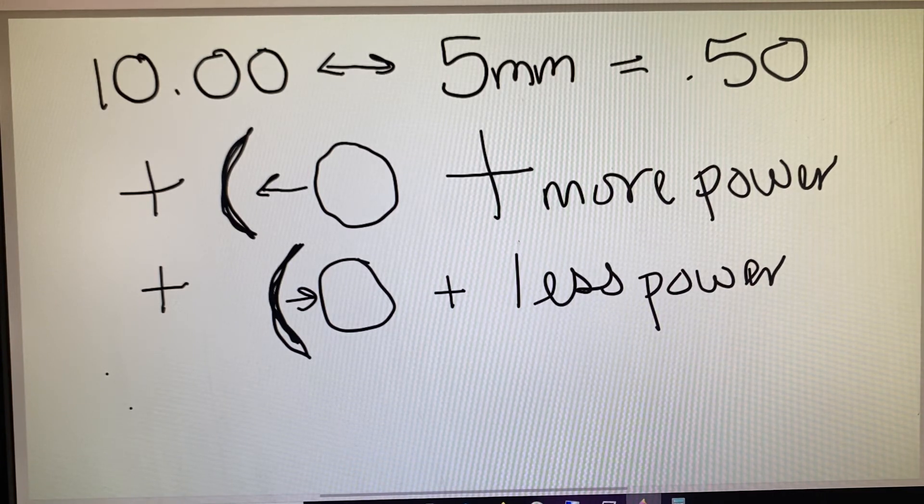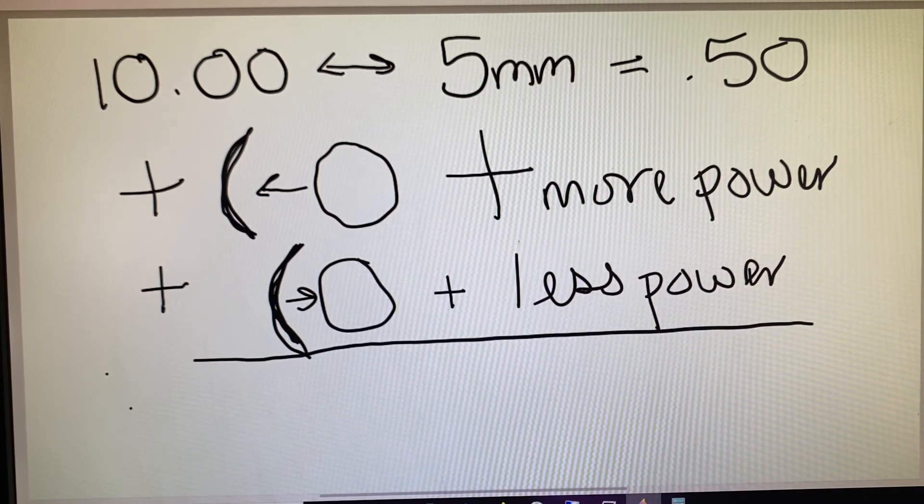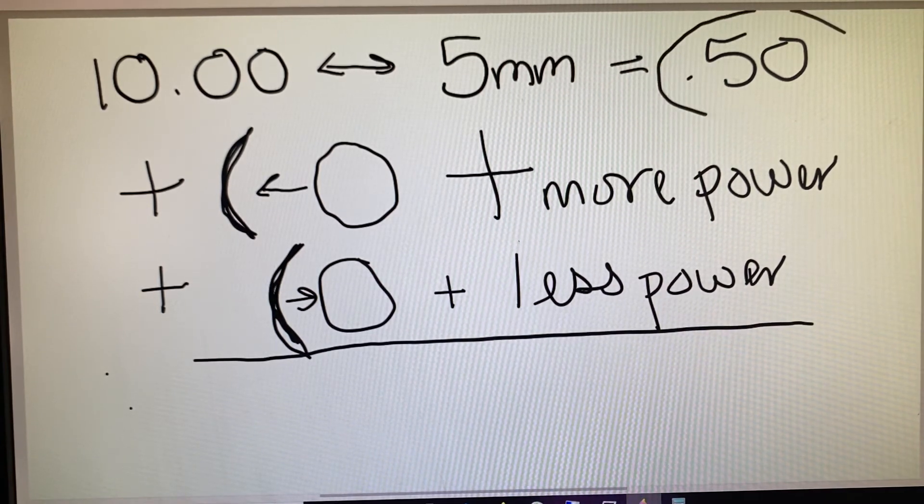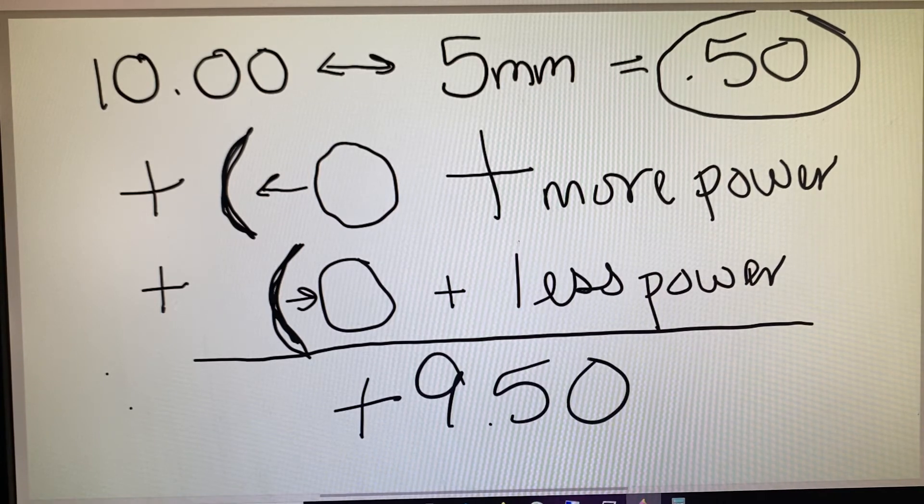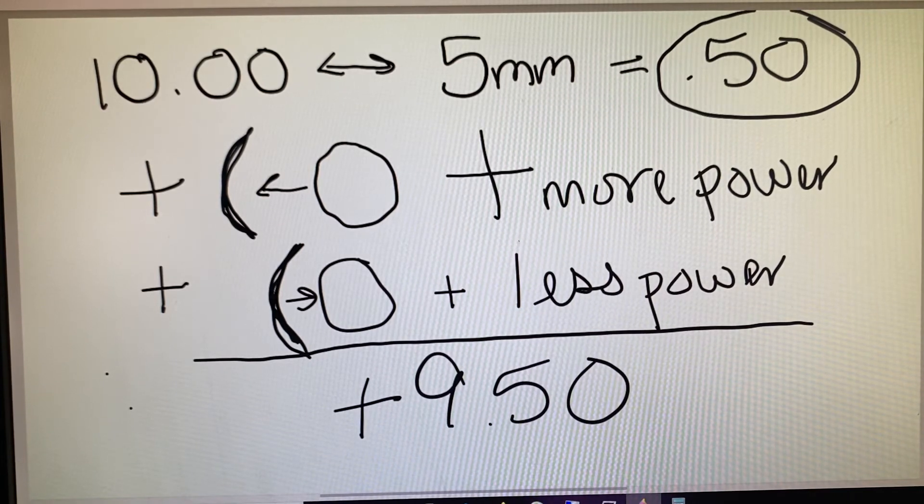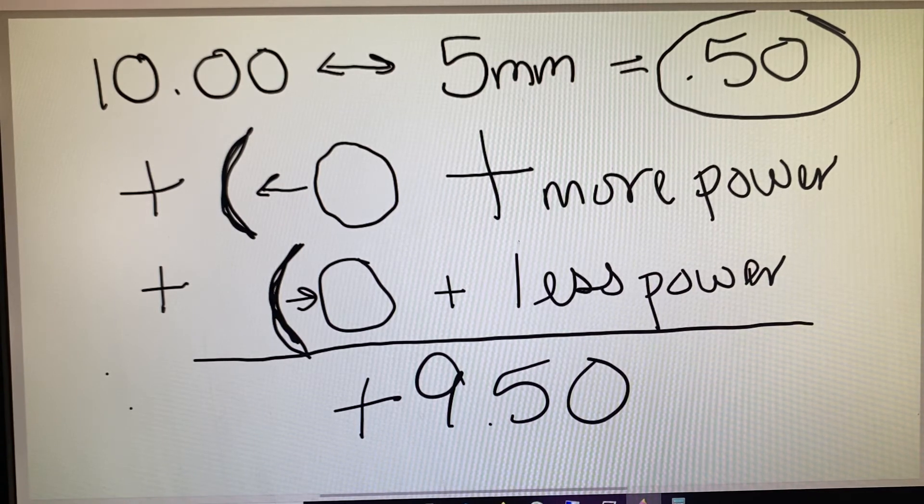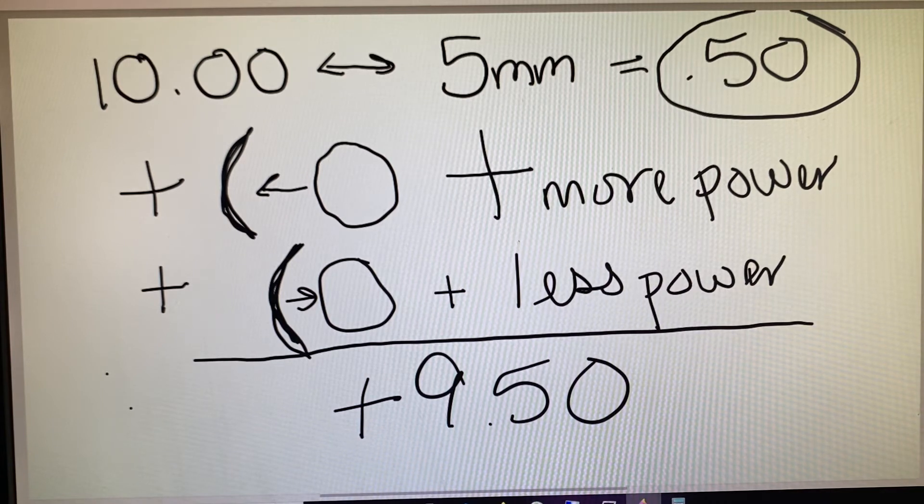And in this particular case, based on what we just learned, there's less power, and we know that a plus 10 lens moved five millimeters changes by a half. We would be looking for an answer of plus 9.50 because that's how the patient perceives this particular lens because they're seeing less power based on the fact that the glasses are sitting closer, five millimeters closer.